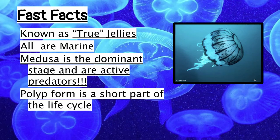Some fast facts on these guys: they're known as the true jellies. Whenever you think about a jellyfish, you're picturing a Scyphozoan. They get their name from their thick mesoglea that is part of their bell. Scientists have been trying to change the name to 'sea jellies' since they're not really fish. All Scyphozoans are marine — there are no freshwater organisms from this class found in lakes or rivers.